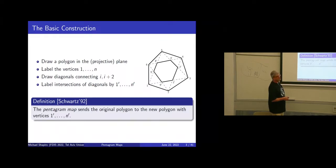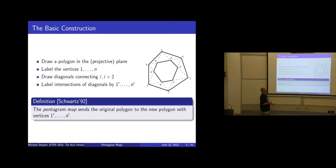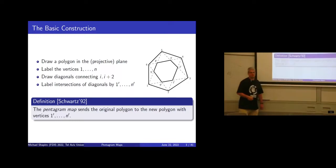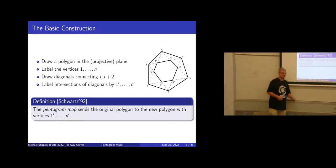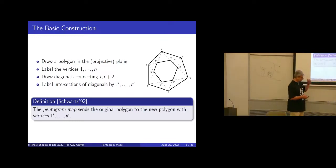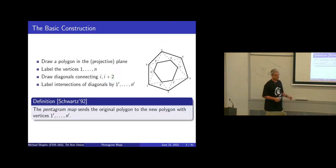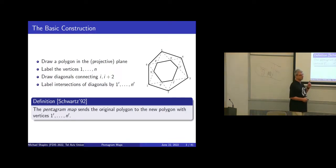There is a rule for enumeration: for example, one-prime starts from one, connects to three, then crosses with two connecting to four. One rule for sure is that two goes after one.